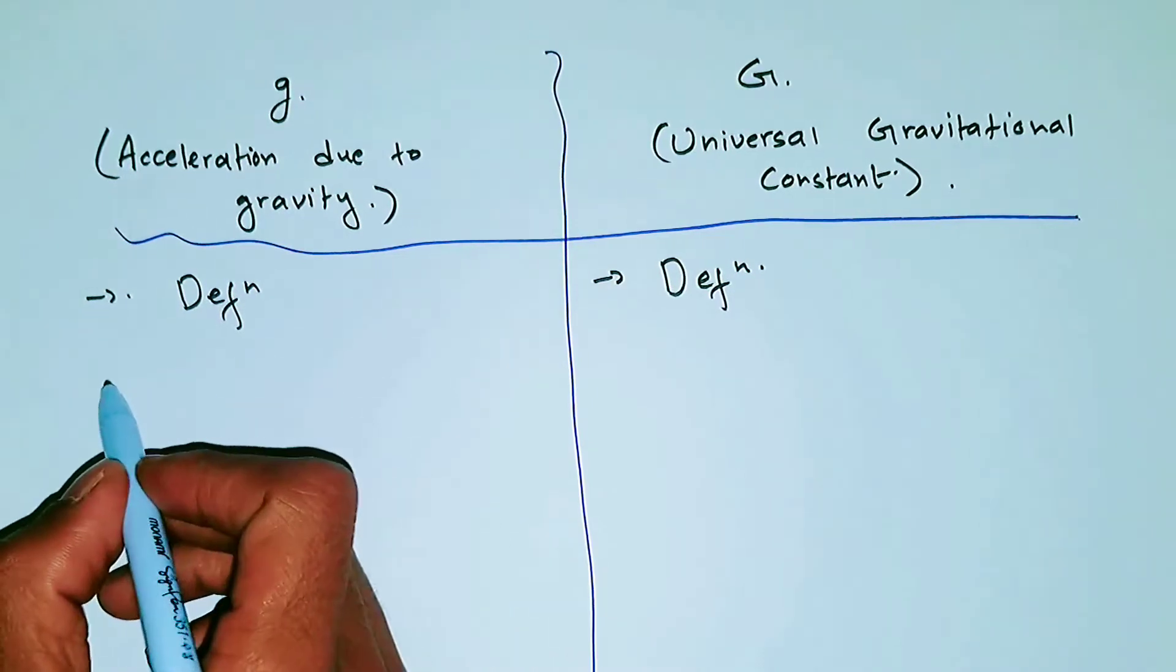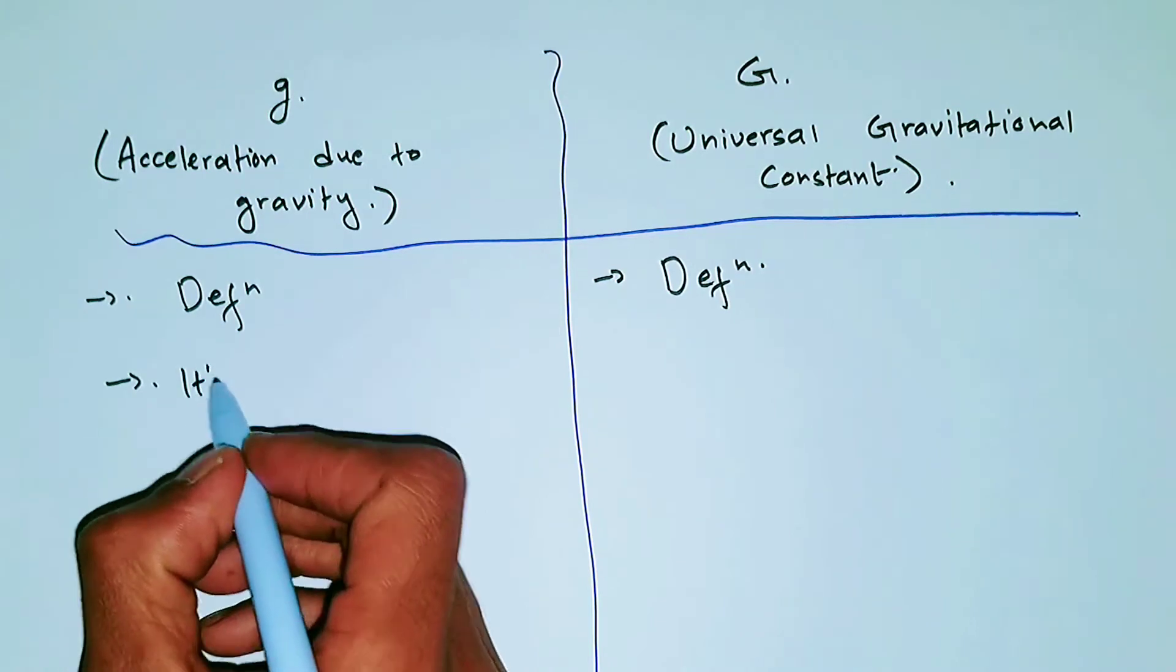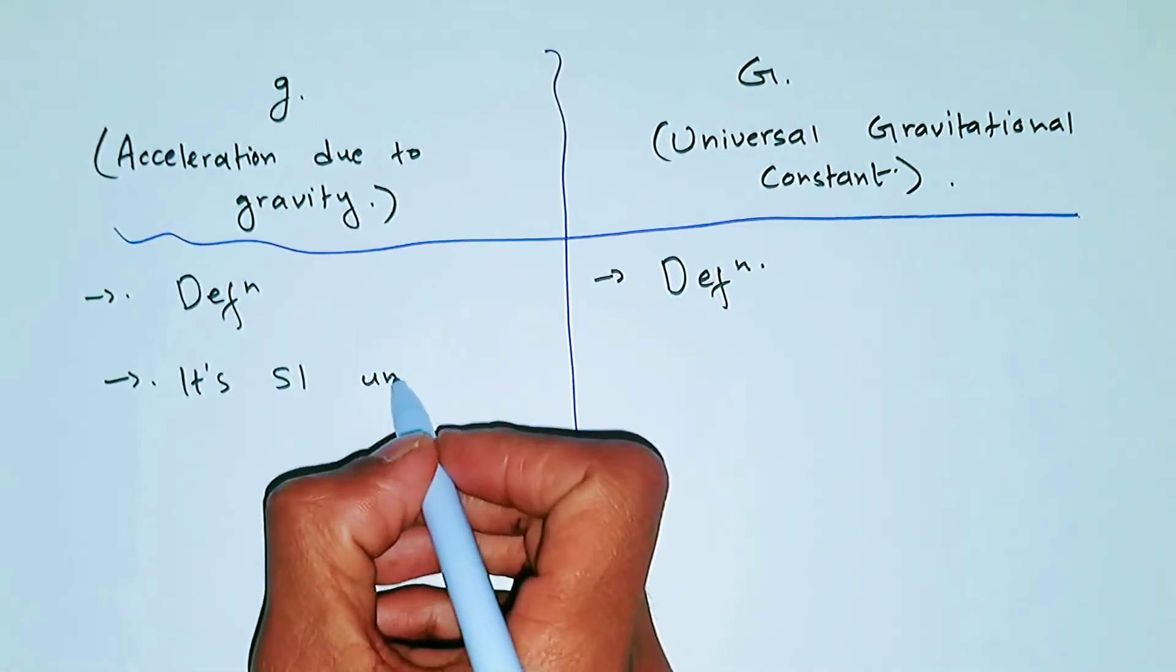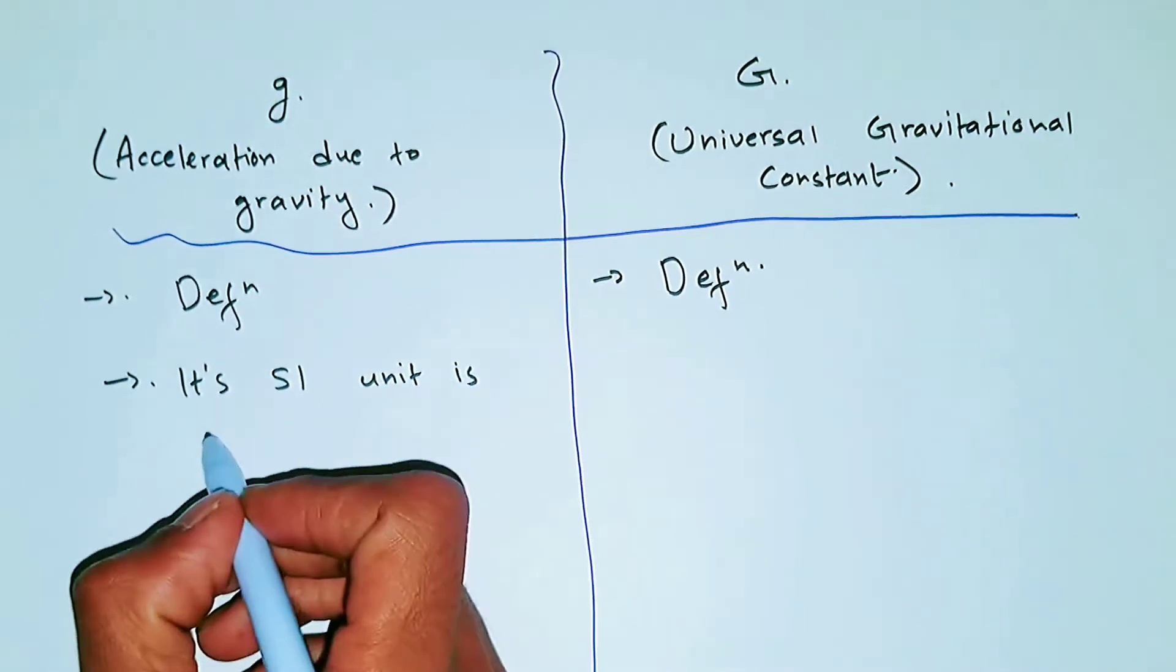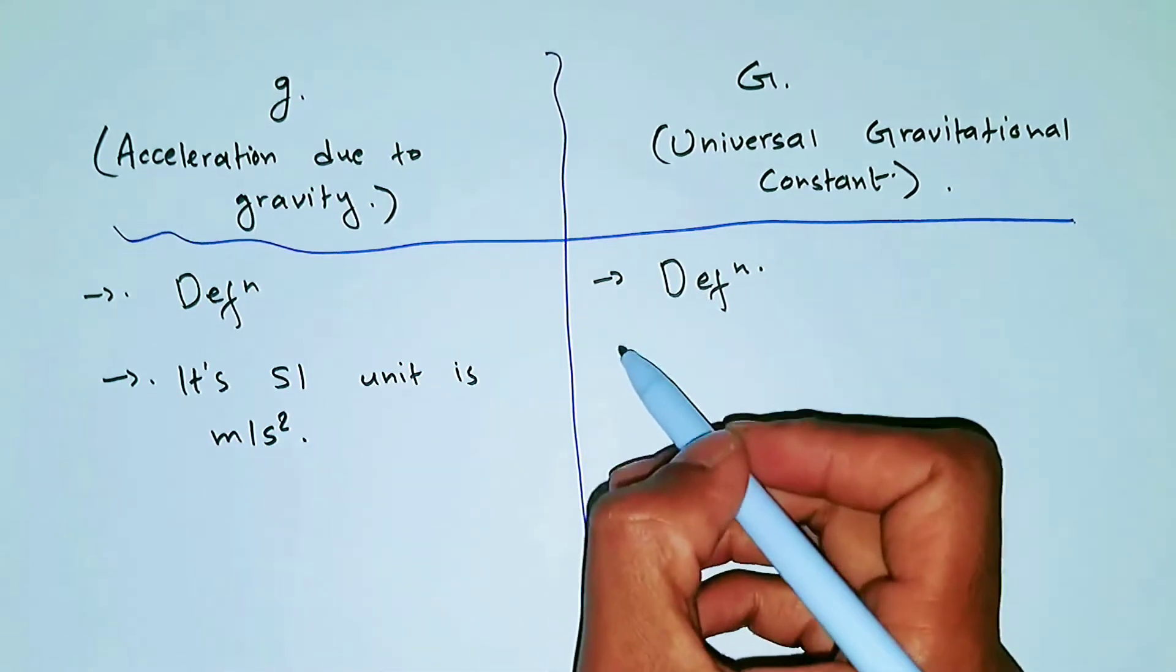For the second difference, what you can write is its units. So the unit of small g, or acceleration due to gravity, is meter per second square because it's acceleration.